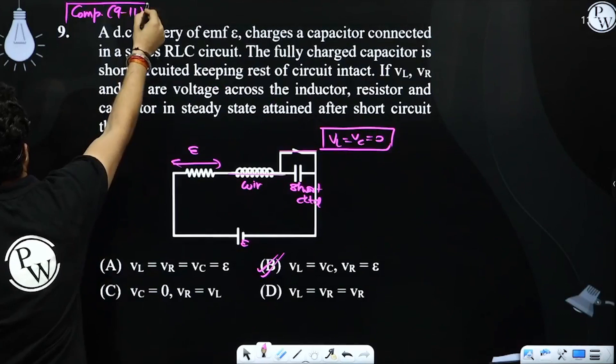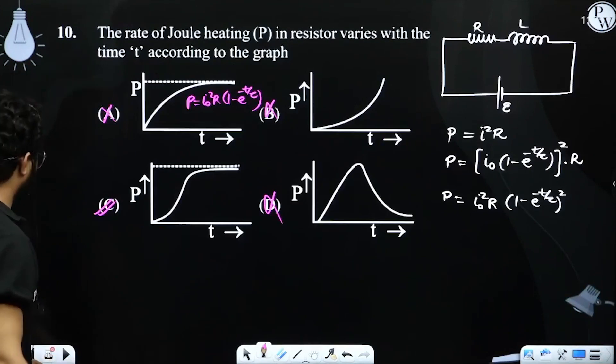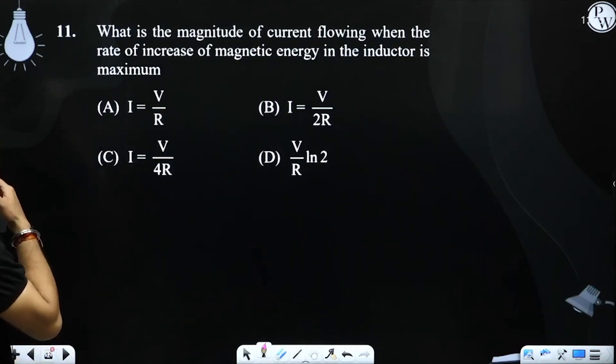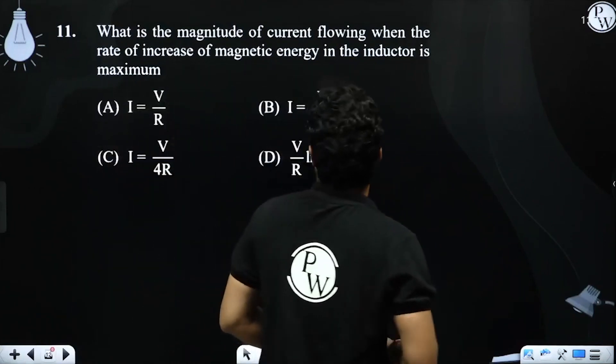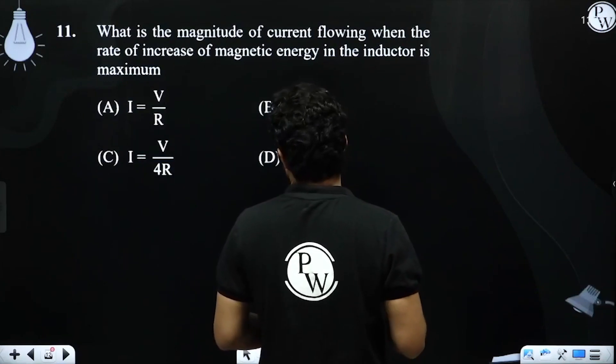So what is the magnitude of current flowing when the rate of increase of magnetic energy in the inductor is maximum? What is the magnitude of current flowing when the rate of increase of magnetic energy in the inductor is maximum?